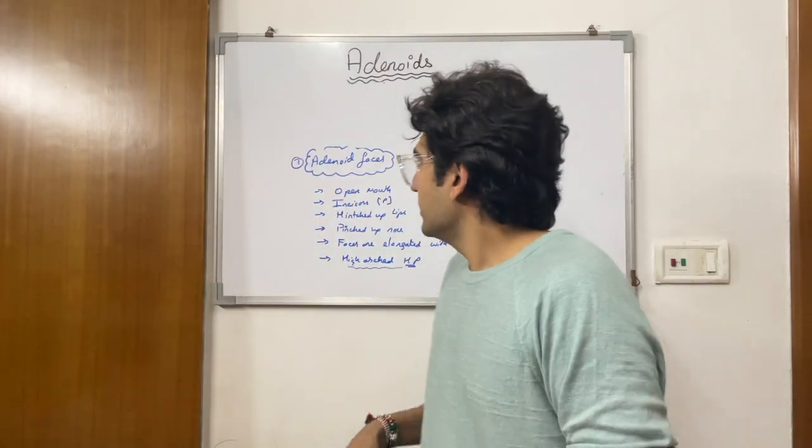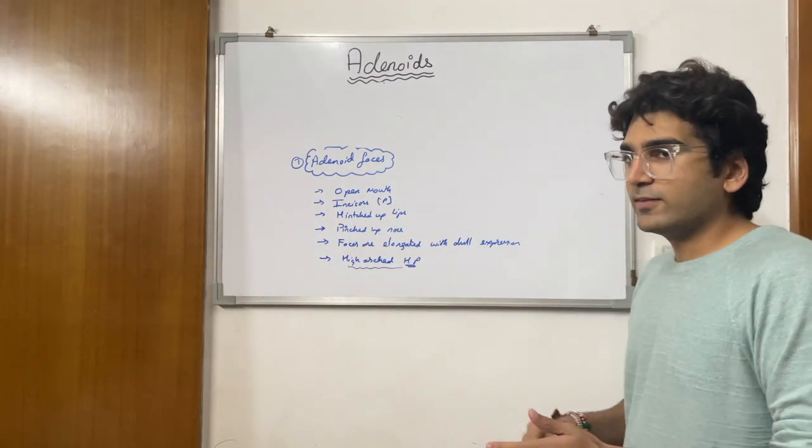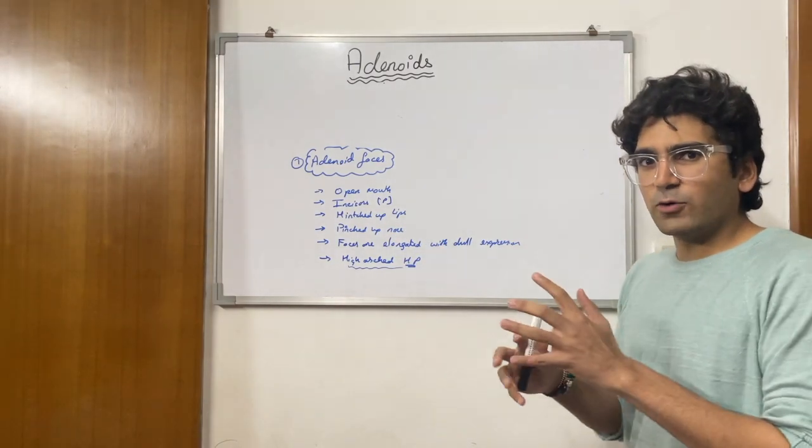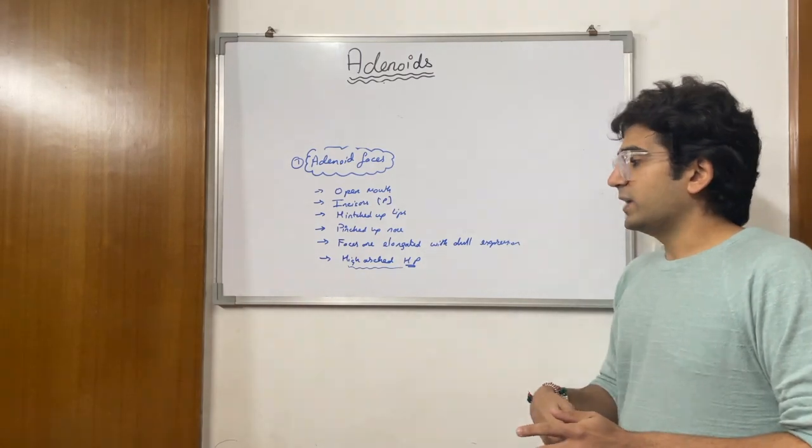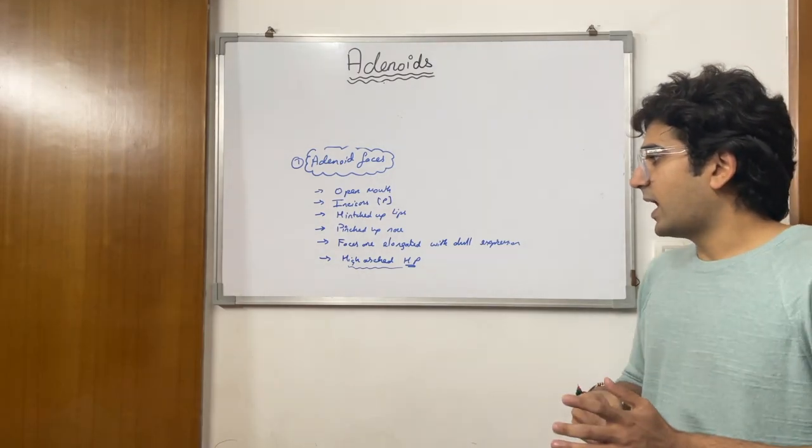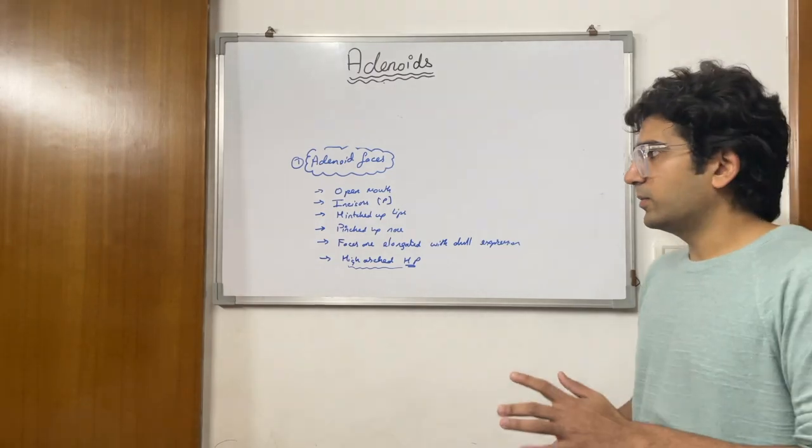We had ended that adenoid faces are very important. They are characterized by open mouth, prominent crowded incisors, hinged upper lips, pinched up nose, faces would be elongated giving a dull expression and the hard palate is highly arched. So these are the things that we have seen.